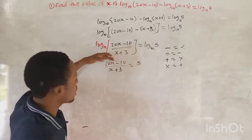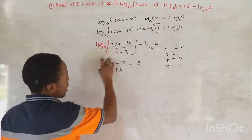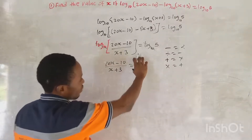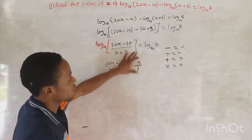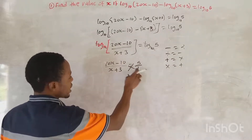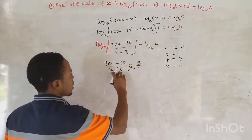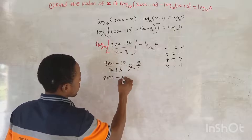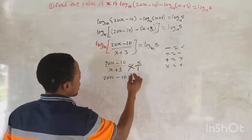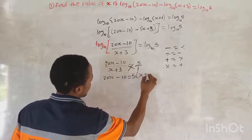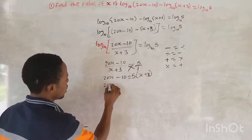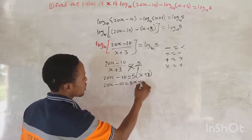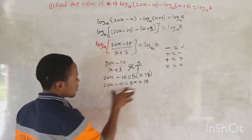So this gives us an algebraic equation. We look at this part — it is a fraction, while the right side is just a number. What we do is cross-multiply. So 1 times (20S minus 10) gives us 20S minus 10, and it is equal to 5 times (S plus 3). Let's open the bracket: 5 times S gives us 5S, plus 5 times 3 gives us 15. So we have 20S minus 10 equals 5S plus 15.